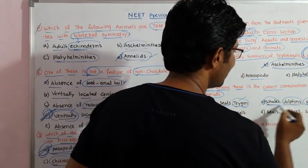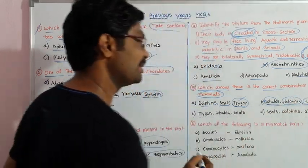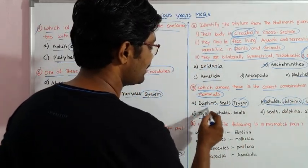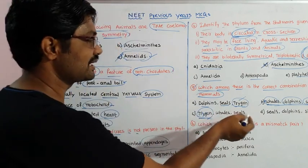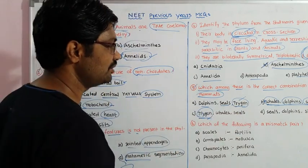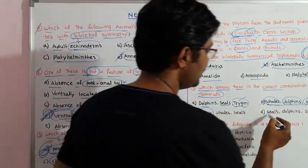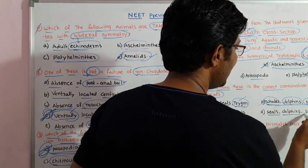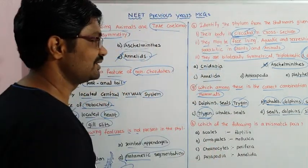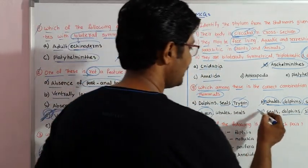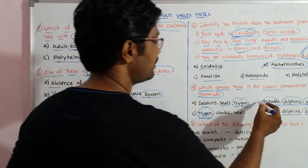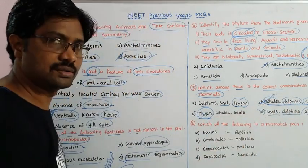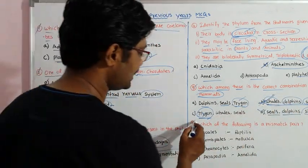Checking the three animals: remember Trygon is on the wrong side as it is a fish, not a mammal. Seals, dolphins, and whales are all aquatic mammals. So this is not the correct combination for option A. We will choose option B — whales, dolphins, and seals — as the correct answer.